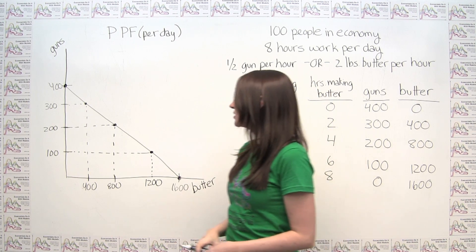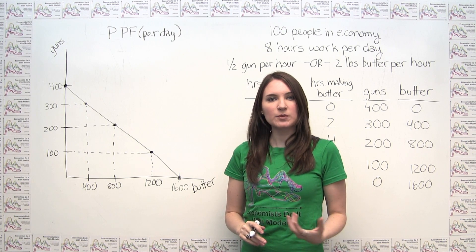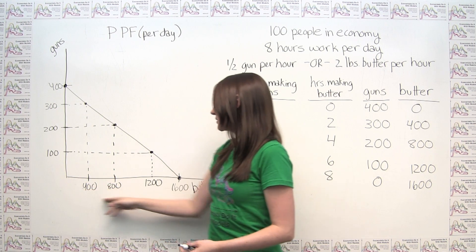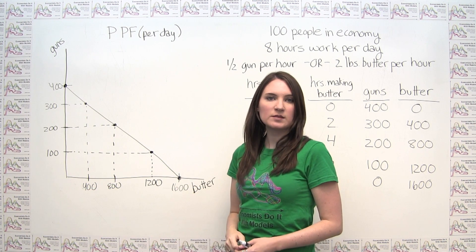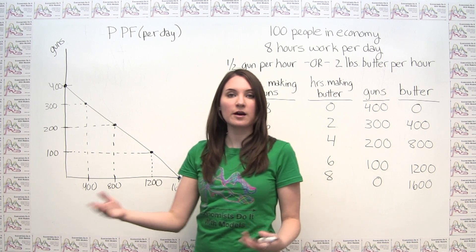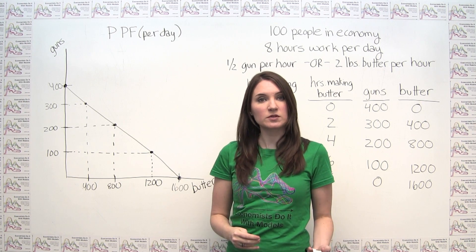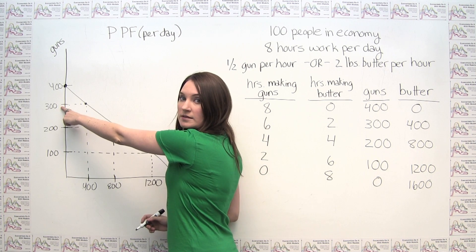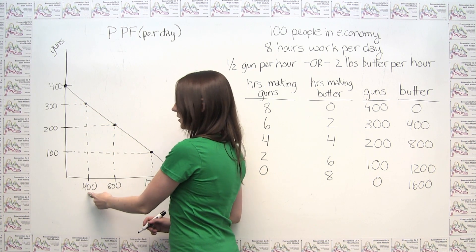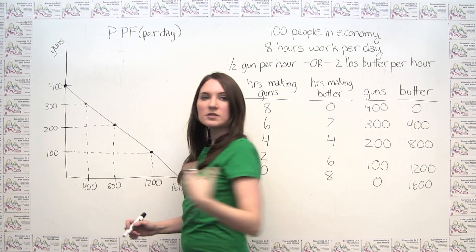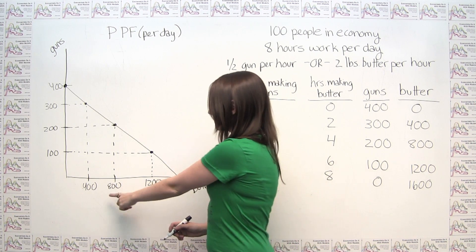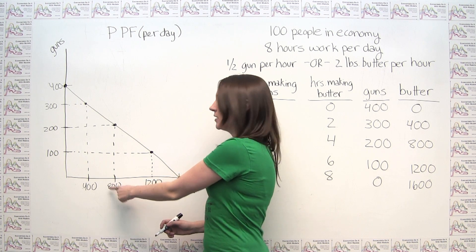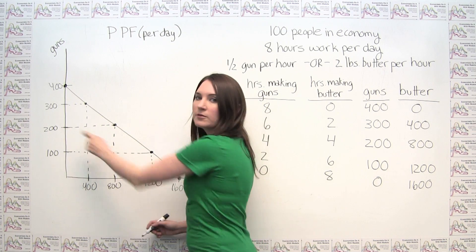So here we have a very simple production possibilities frontier. The PPF has the interpretation that for any given quantity of one good — whether guns or butter — the frontier tells us the maximum of the other good that the economy is able to produce. For example, if the economy is producing three hundred guns, it can produce a maximum of four hundred pounds of butter. Conversely, if the economy is producing eight hundred pounds of butter, it can produce a maximum of two hundred guns.